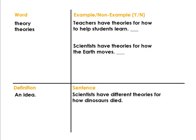The next word is theory. Say it three times: theory, theory, theory. Let's read the definition — I read, and then you read: An idea. Before we continue, remember that theory can also look like theories. If there is more than one theory, it is theories.